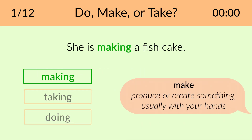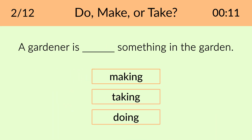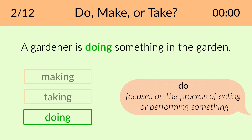She is making a fish cake. Make means to produce or create something, usually with your hands. A gardener is doing something in the garden. Do focuses on the process of acting or performing something.